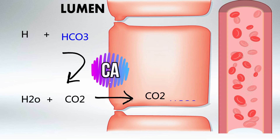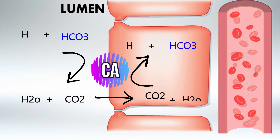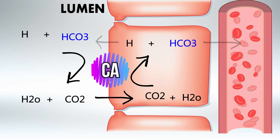Inside the cell we will reverse what we just did, so using the same enzyme we'll combine carbon dioxide and water to create hydrogen and bicarbonate. Bicarbonate will then be absorbed into the blood, and hydrogen will be expelled into the lumen to repeat the cycle.